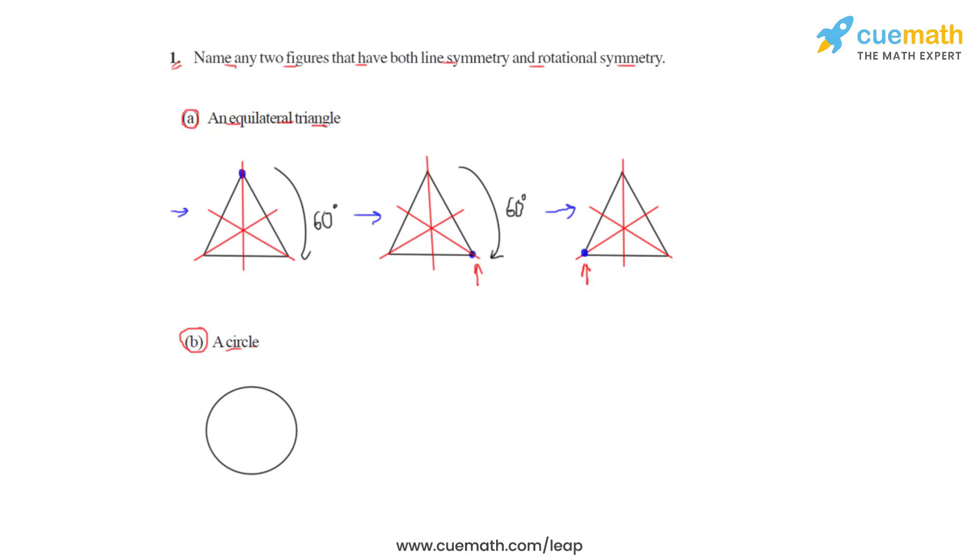Again, if we rotate this figure by 60 degrees in the clockwise direction, we will see that the blue dot will go back to the position where it is in the first figure. So an equilateral triangle has both line and rotational symmetry.